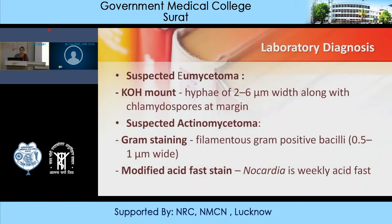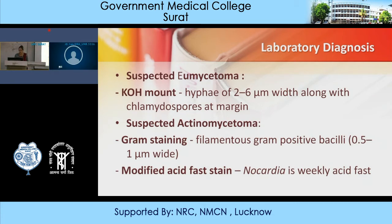The KOH mount shows hyphae in Eumycetoma — hyphae of 2 to 6 micrometers width along with chlamydospores at the margin. Bacteria cannot be seen in KOH mount for Actinomycetoma, so Gram staining is required. In Gram staining, filamentous Gram-positive bacilli of 0.5 to 1 micrometer width are seen, generally Nocardia species. Nocardia is also seen with modified acid-fast stain using 1% H₂SO₄ modification, making it weakly acid-fast.